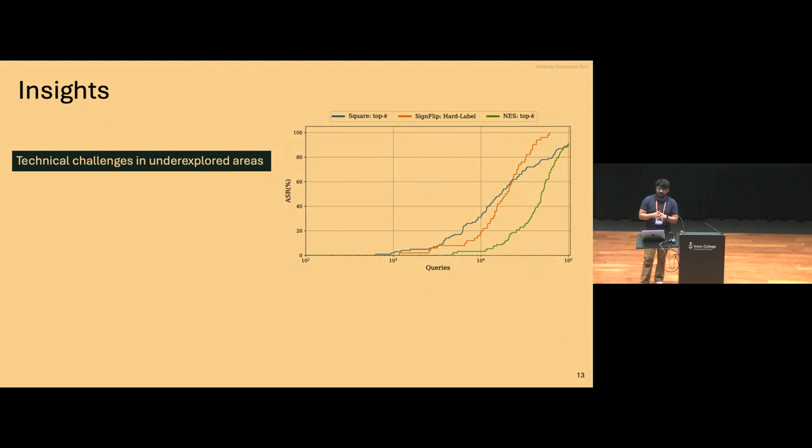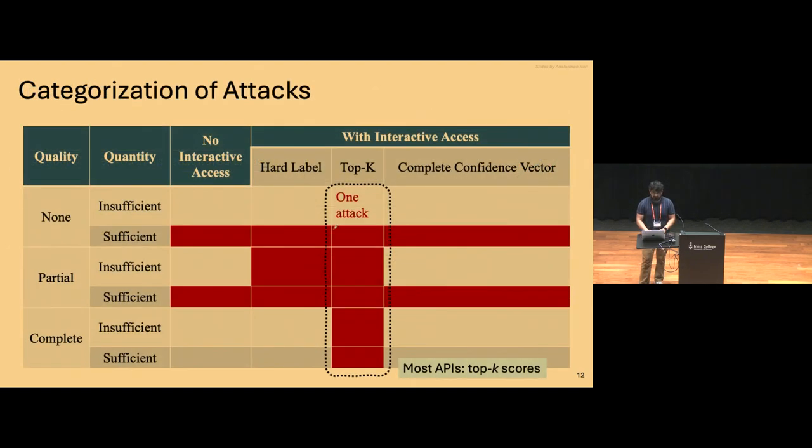And based on this analysis, we also try to draw insights as to what we could do or what future directions the research community could take. The first one is that the kind of areas that I just described, for instance, the top-k setting.